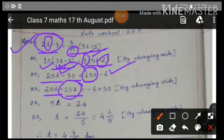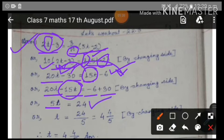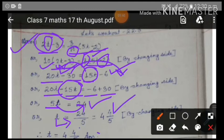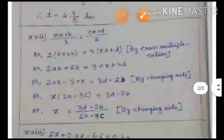So minus 15t on the left. The constant minus 6 stays on the right; minus 30 changes side to become plus 30. So 20t minus 15t = 5t, and 30 minus 6 = 24. Therefore t = 24/5, which as a mixed fraction is 4 and 4/5. This is the value of t.